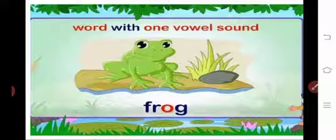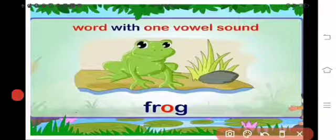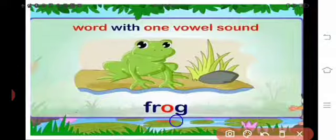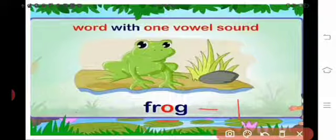You see this picture — what is given? Frog: F-R-O-G. Here, O is the vowel sound, so it is one syllable.